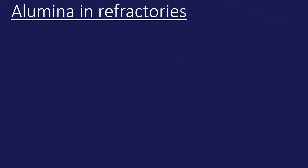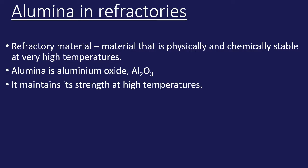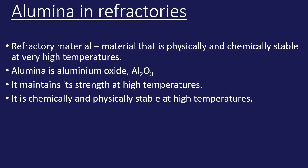Next up is looking at alumina in refractories. So let's look at what is meant by refractory material. A refractory material is a material that's physically and chemically stable at very high temperatures. Alumina is aluminium oxide, which has the chemical formula Al₂O₃. It maintains its strength at very high temperatures and it's also chemically and physically stable at high temperatures, so you can see already that it fits the definition of a refractory material.